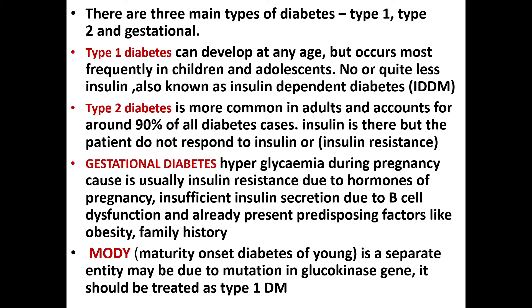Gestational diabetes is hyperglycemia during pregnancy, caused by insulin resistance due to pregnancy hormones, insufficient insulin secretion from beta cell dysfunction, and pre-existing predisposing factors such as obesity or family history. Gestational diabetes is an indication that in future that female may become an actual diabetic patient, and it has its own complications.